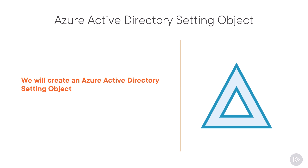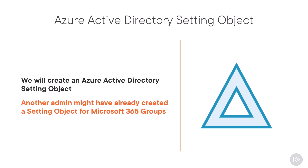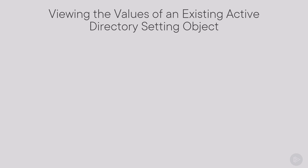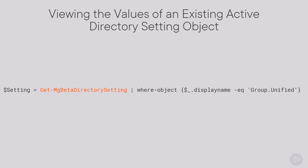But before you go creating it, make sure that there isn't one that already exists, because another admin might have already created one, or even yourself for another setting a while ago and you forgot about it. To verify if there's already an existing Active Directory setting object and the configurations inside, we will use the Get-MgBetaDirectorySetting PowerShell cmdlet, filter where the display name is Group.Unified, and save it in a variable called setting. If we see values, it means we already have an AD setting object and can just modify that one. But if nothing is returned, it means there is no Active Directory setting object, so we have to create our own.